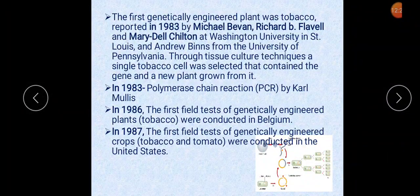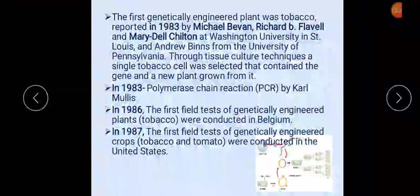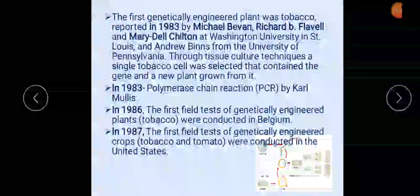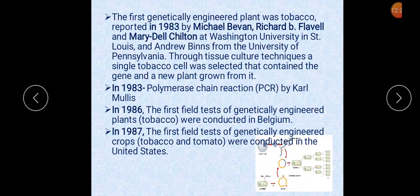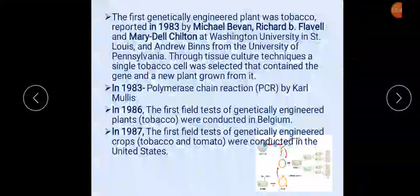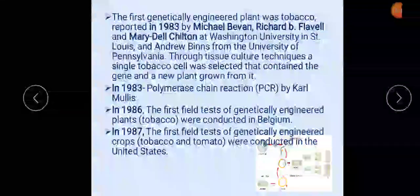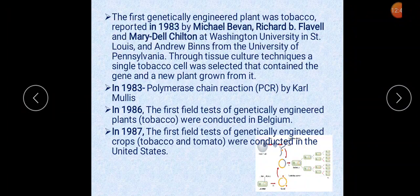The first genetically engineered plant was tobacco, reported in 1983 by Michael Bevan, Richard Flavell, and Mary-Dell Chilton at Washington University in St. Louis, and Andrew Binns from the University of Pennsylvania. Using tissue culture techniques, a single tobacco cell containing the gene was selected and a new plant was grown from it.